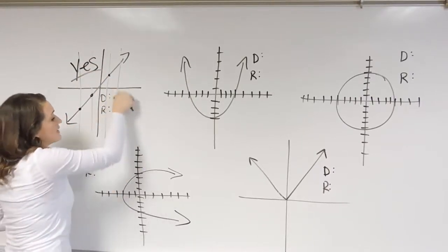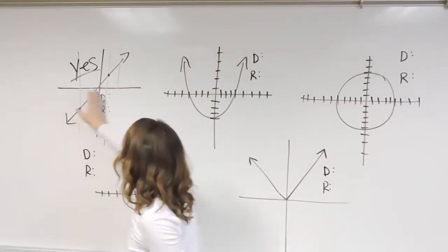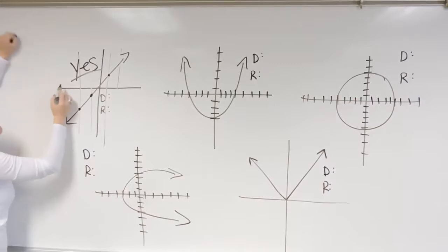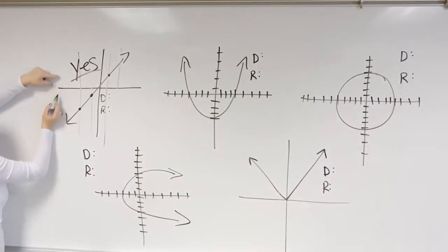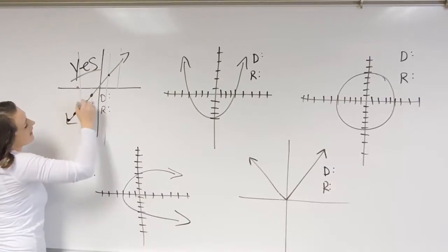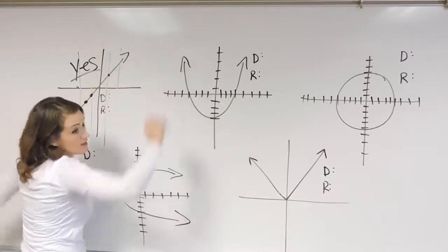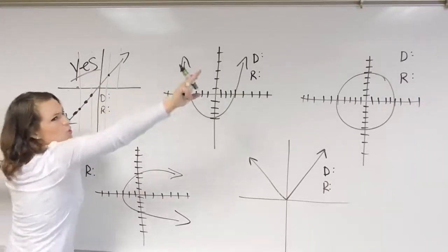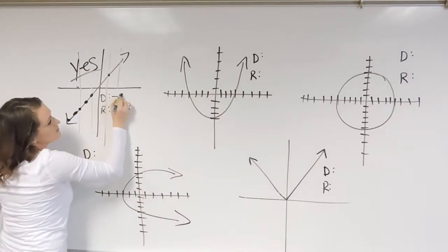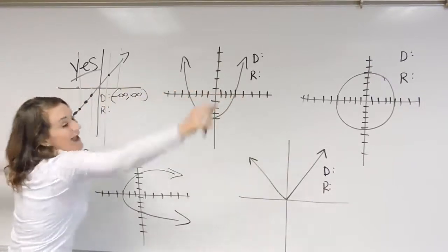Now we need to state the domain and range. The domain is the span of all of our x-values. Looking at this graph going from left to right, where does it exist on the x-axis? The two arrows on this graph mean it's going on and on forever. So going left to right, my graph is always going to be there. The domain is negative infinity to positive infinity because this graph exists regardless of where we are on the x-axis.